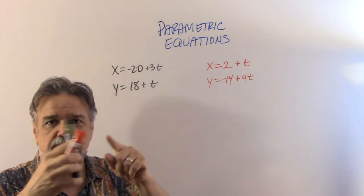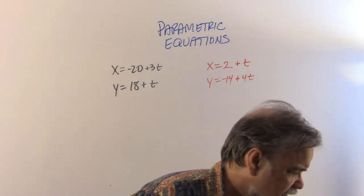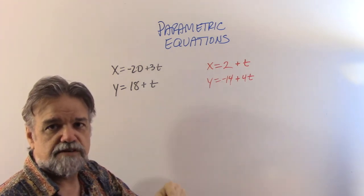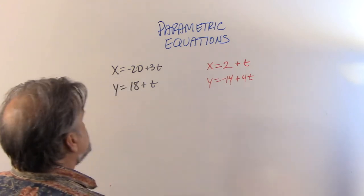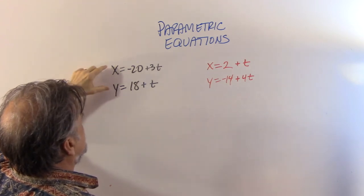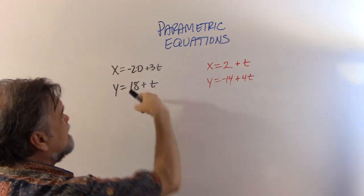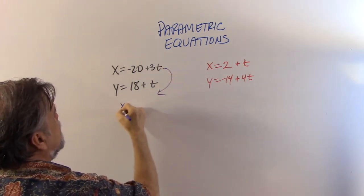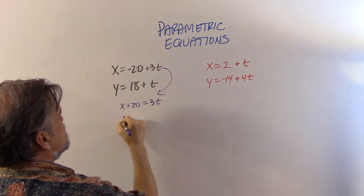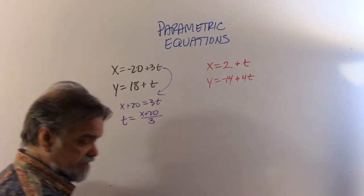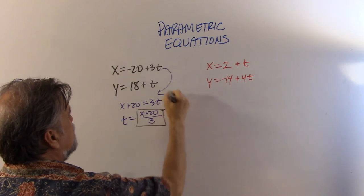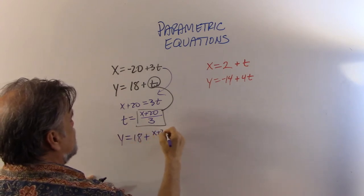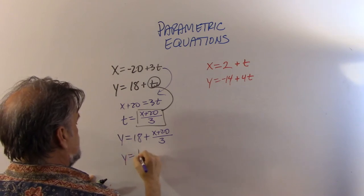To find the intersection point, I want y as a function of x for both ants. I need to eliminate t. For the black ant: from x = -20 + 3t, I get t = (x + 20)/3. Plugging that into y = 18 + t gives y = 18 + (x + 20)/3, which simplifies to y = (1/3)x + 24⅔.